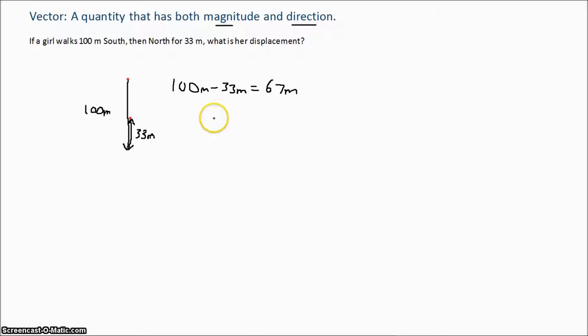Now that doesn't tell us much, so her displacement has to include the direction. Since she is farther south than where she started from, the actual answer is 67 meters to the south. So put our box around that, and we are done.